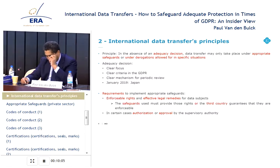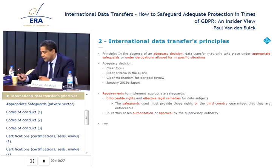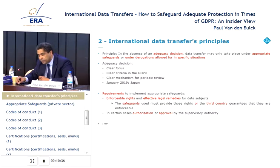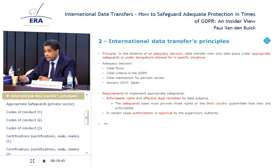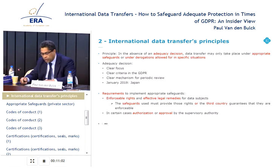Another improvement brought by the GDPR concerning appropriate safeguards is the harmonization of the authorization and approval regime. The system is not only harmonized but also lighter. For example, for standard contractual clauses, you don't need an authorization. The same applies to the use of binding corporate rules — even though the BCRs themselves need to be approved by the authority, for the use you don't need an authorization. That was a problem we encountered in the past with Portugal, where it was impossible to obtain an authorization because Portugal denied the use of BCRs.